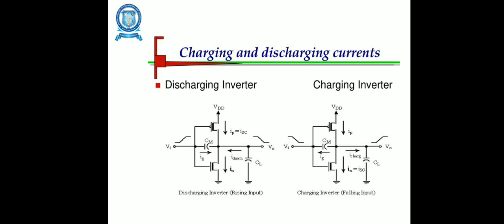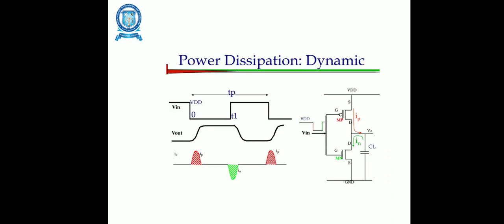In the case of charging and discharging circuits, the first diagram shows the discharging inverter and the second shows the charging inverter. In the discharging inverter, the NMOS will be turned on and PMOS will be turned off. When the NMOS is turned on, the output will be from ground, so it tends to discharge the inverter. In the case of the charging inverter, the output will be from VDD, so it charges to a value of VDD.